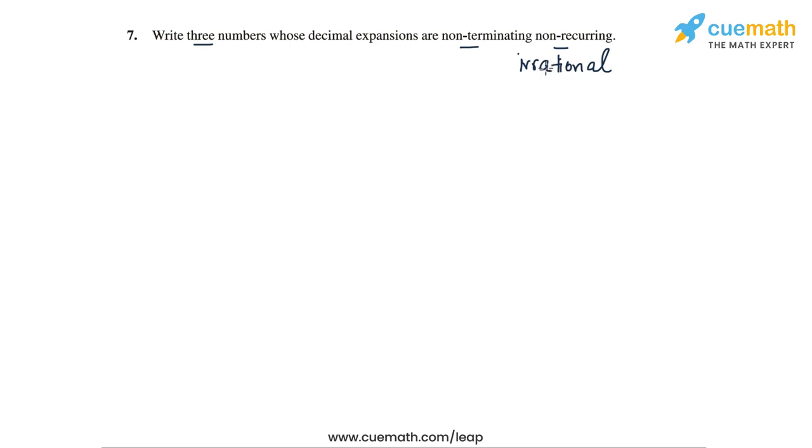So one way to answer this question is to write any three irrational numbers, like for example root 2, minus cube root of 3, and let's take pi. All three are irrational numbers and hence the decimal expansions of all three will be non-terminating, non-recurring.